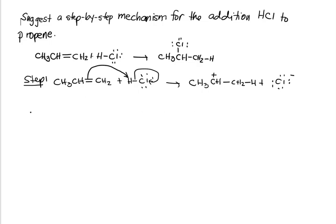And that takes us to step two. So the reactant in step two is the product in step one: CH3CH positive CH2H, Cl negative. Okay, we have four lone pairs on the chlorine, we have a positive charge at the middle carbon.